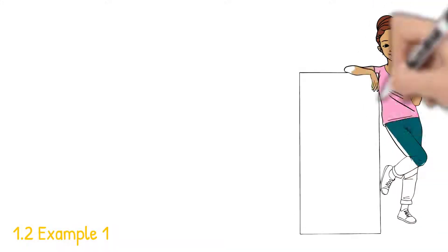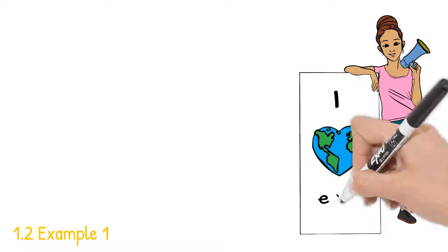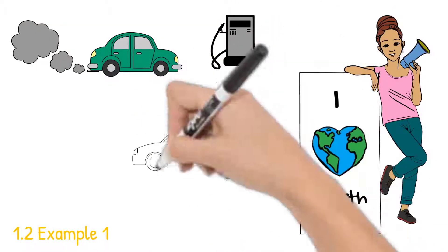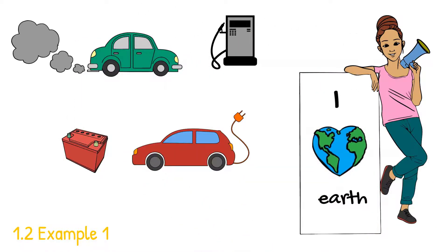1.2 Example 1. A recent study by the Environmental Protection Agency, the EPA, measured the gas mileage, the miles per gallon, for 20 models of cars. The results are shown below.